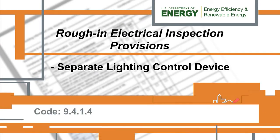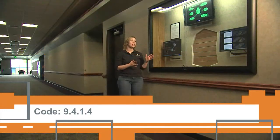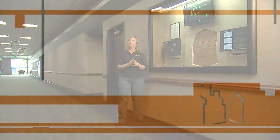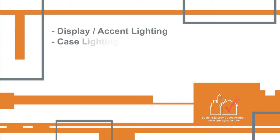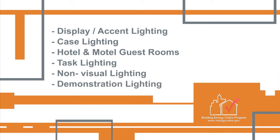According to Section 9.4.1.4, certain lighting uses must have separate control devices that operate independently of the space controls. Examples are display or accent lighting, case lighting, hotel and motel guest rooms, task lighting, non-visual lighting, and demonstration lighting.